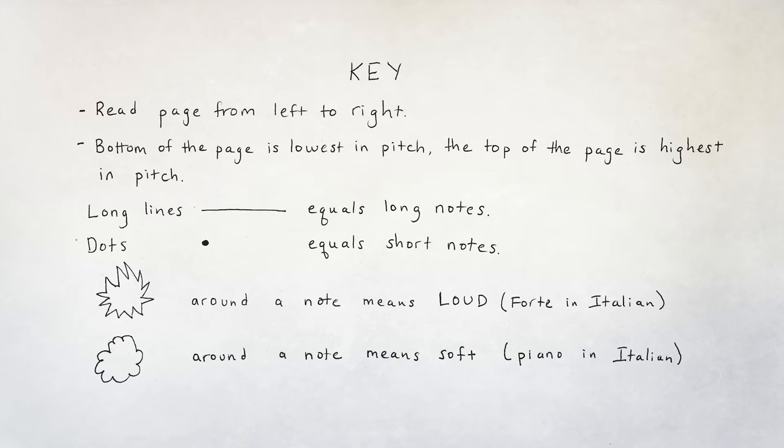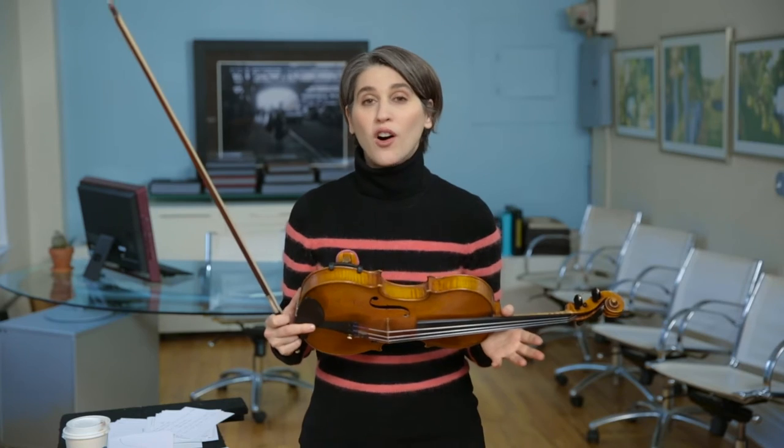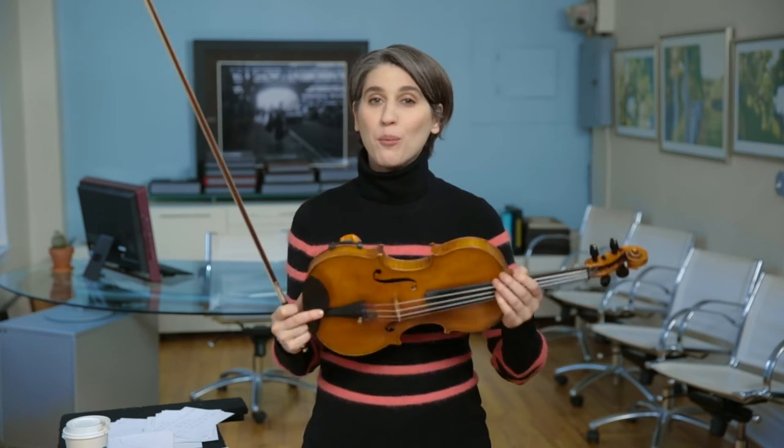In all of the above examples, if I wasn't here to explain what those symbols meant, you would need a key to read it, to be able to understand what the symbols meant. I've made a key for the examples that we just went through, and it looks like this. Now we're going to review all of the composer's choices — sound effects, emotions, and everything we've discussed since Unit 1 — and use it as a brainstorming session to help you start to work on your keys, which you're going to use to compose your piece.